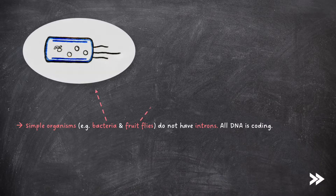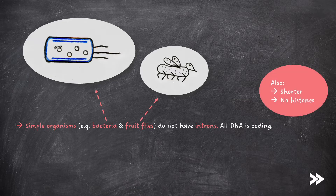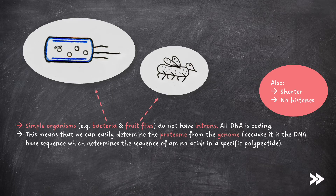Simple organisms, such as bacteria and fruit flies, do not have introns — all their DNA is coding. Also, because the DNA in simpler organisms is short and has no histones, DNA is more accessible. This means that we can easily determine the proteome from the genome, because it is the DNA base sequence which determines the sequence of amino acids in a specific polypeptide.